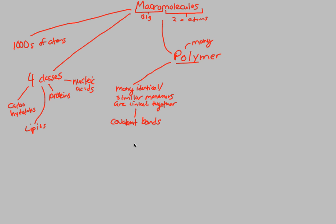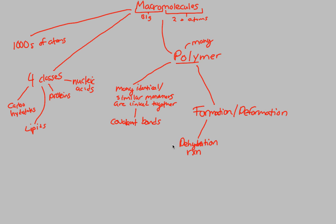Another thing we want to talk about when looking at polymers is the idea of formation and deformation — how do we make a polymer and how do we break one down? The formation of polymers is done through a reaction known as a dehydration reaction, abbreviated as RXN. Another synonymous term is a condensation reaction. Be familiar with both — condensation reaction and dehydration reaction literally mean the same thing.